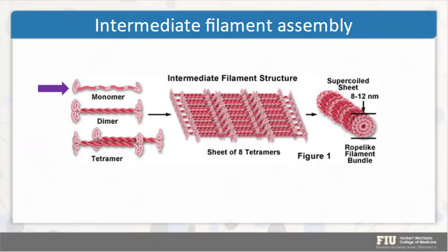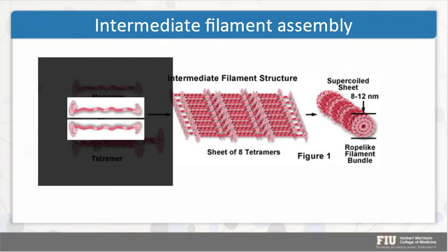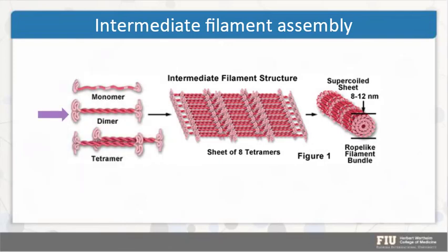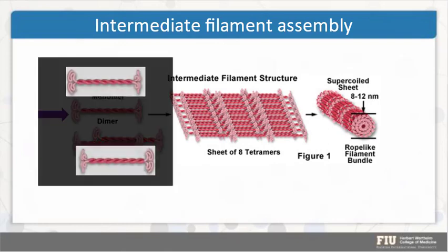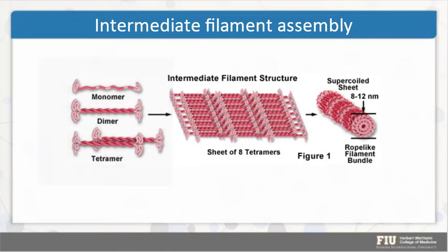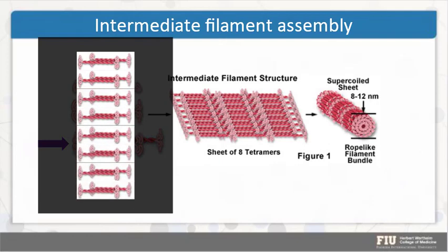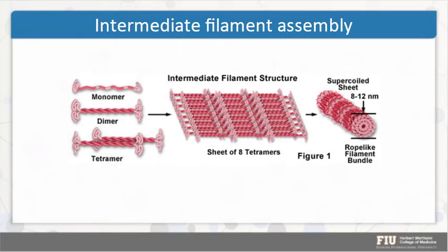I like this one too because we actually created these animations with images from a picture. We added this animation in a somewhat staggered manner so you form your tetramer. Now imagine that we lay eight of these tetramers side by side — head next to head — and we end up with the octamers. If we line up these octamers one after the other, we form these longer octameric sheets.